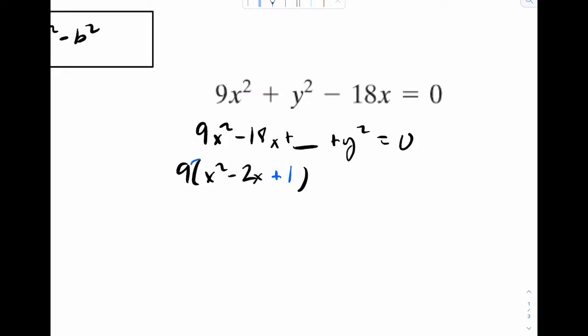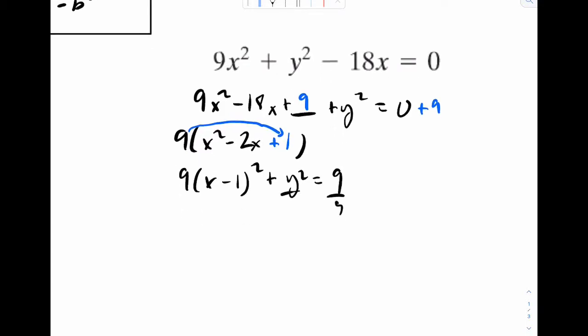But again, it's not really a 1. Put the 9 back into it. It's actually a 9. Which means I have to add 9 to this side to balance it. And now we can factor. Now I'll get rid of that 9 and make it to a 1. And there it is. There's our standard conic form.